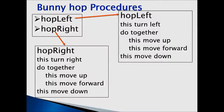If we take a look at the hop left procedure, the instructions say: turn left, do together — move up, move forward, move down. Now let's take a look at hop right: turn right, do together — move up, move forward, move down. If we compare hop left and hop right, the instructions are almost the same except for the value left and the value right.